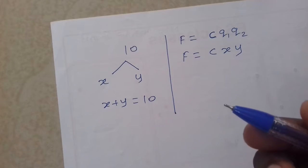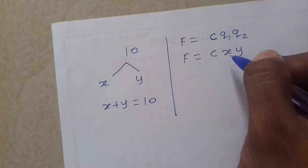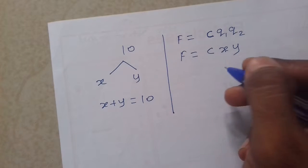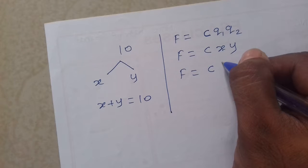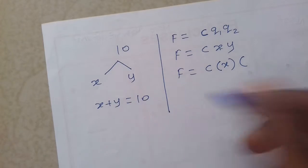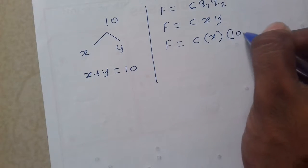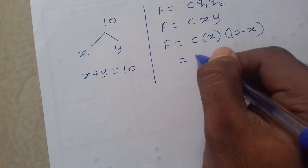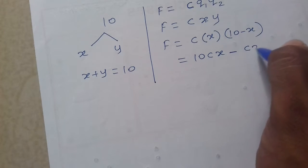The function mein variables only one chahiye, therefore either x ko remove karna chahiye ya phir y ko remove karna chahiye - we will remove y. So function = constant into x into y, but y can be written as 10 minus x. After multiplying, this becomes 10Cx minus Cx squared.